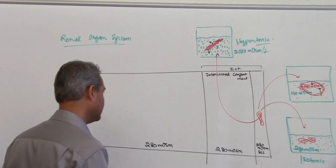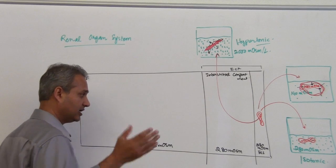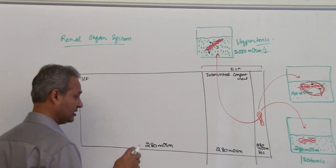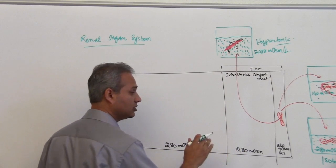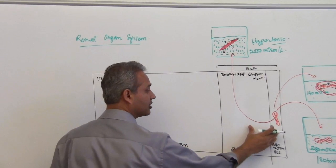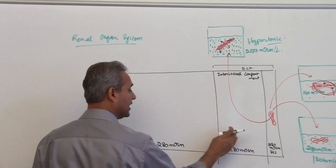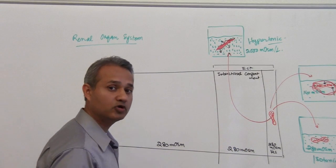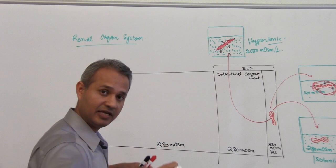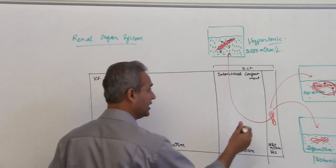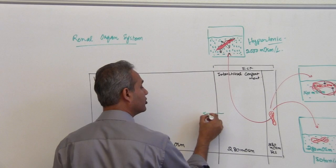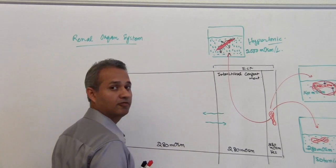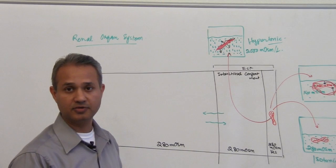Now we have to understand one concept. If you add fluid to any of the compartments and that fluid has the same osmolarity as the remaining fluid, that is isotonic fluid, then the water will not move from one compartment to the other.